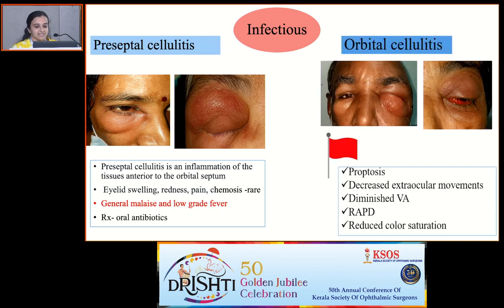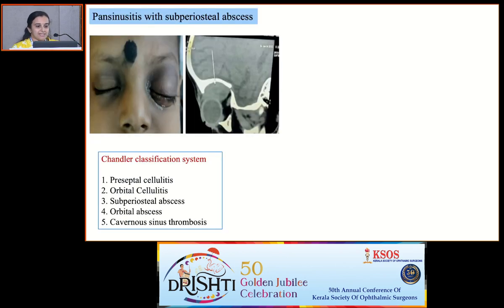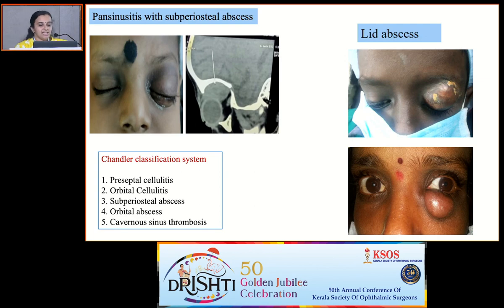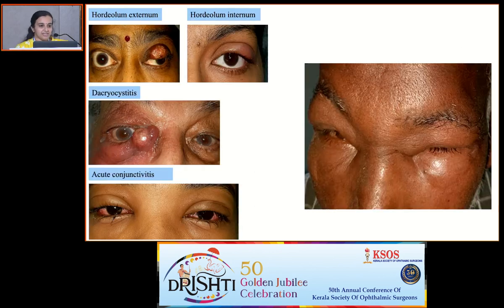But whenever there are danger signs like proptosis, limitation of eye movements, or optic nerve involvement, think about orbital cellulitis, or even the spectrum can extend up to life-threatening conditions like cavernous sinus thrombosis, which needs aggressive management. Lid edema can also be due to collection of pus itself, as in the case of lid abscess or lacrimal abscess, which needs incision and drainage.